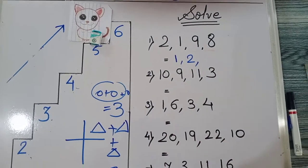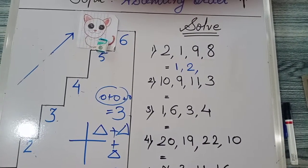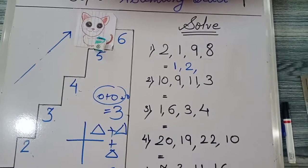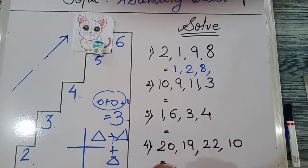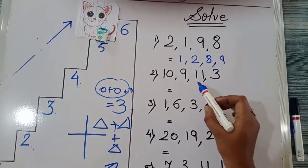And after 2, which number will be? 9 or 8? Which number comes first? 8 pehle aane wala hai ya 9 pehle aane wala hai? 8 pehle aane wala hai. Then, 9. So, likewise.